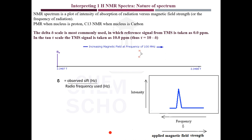Now we come to the important part: interpreting the NMR spectra. The NMR spectrum is a plot of intensity of absorption of radiation versus magnetic field strength or the frequency of radiation. When the nucleus is a proton, we call it proton magnetic resonance.